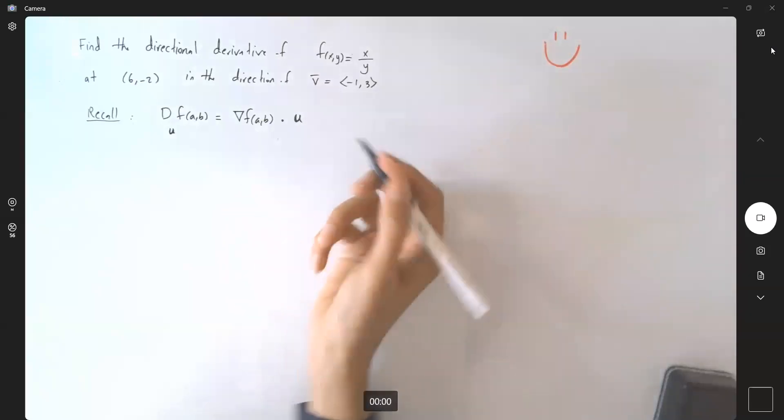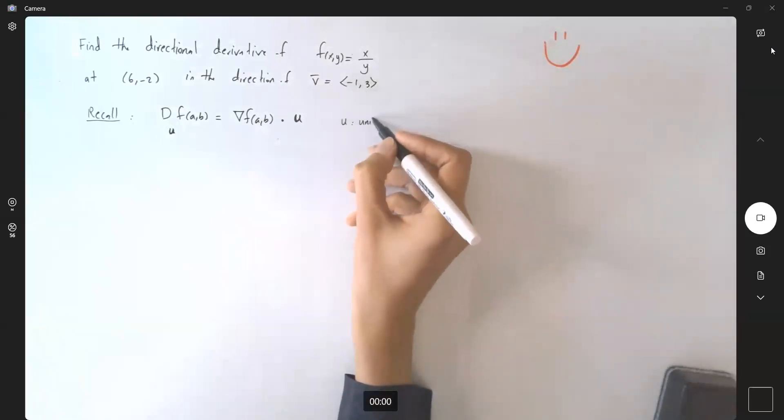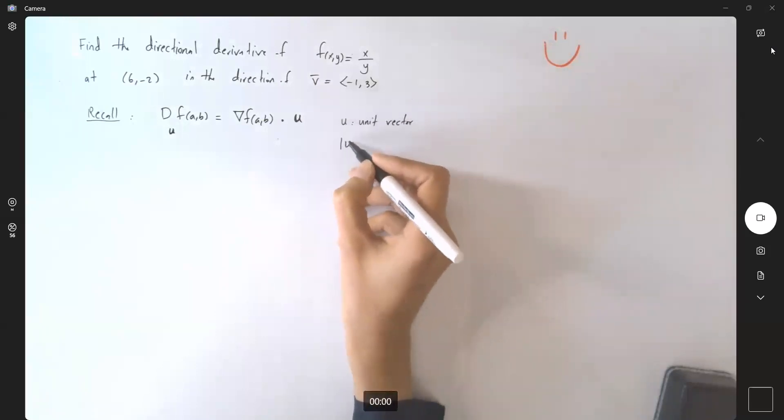So the very first question is, in this case, is our vector a unit vector? Or is the norm of vector u equal to 1?